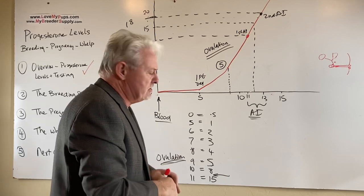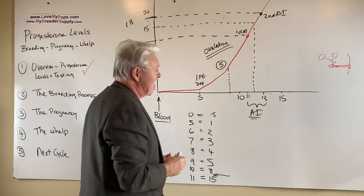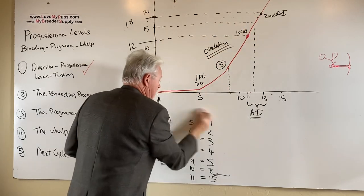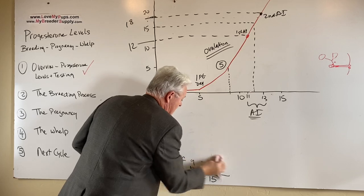So people say, oh, my dog's progesterone level jumped up really quickly. No, probably what's going on is you're just in this part of the slope and it goes up quickly once you get past the level of five. That's all that's going on. Doubles about every day. All right. One last thing about this split heat.